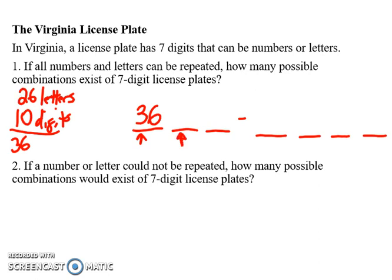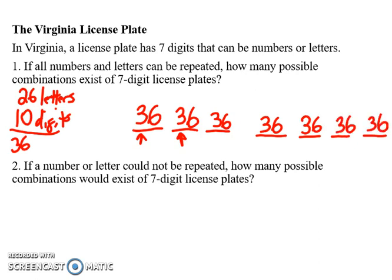When I go to the second slot, the number hasn't changed, because I still have 36 total alphanumeric characters I could use. The third slot also has 36, and the fourth again has 36 different alphanumeric characters I could use. The same goes for the last three places — all of them have 36 options. To find the total number of outcomes, I multiply them all together, which gives me 36 to the 7th power.